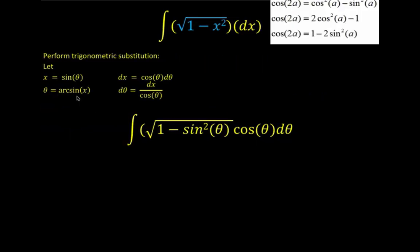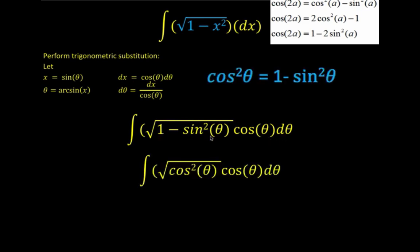Let's begin. Because of our substitution x equals sine theta, instead of x squared we substitute sine squared theta. Then dx is replaced with cosine theta d theta. Now recall that 1 minus sine squared theta equals cosine squared theta. So using our trigonometric identity, we replace 1 minus sine squared theta with cosine squared theta, and copy the rest.